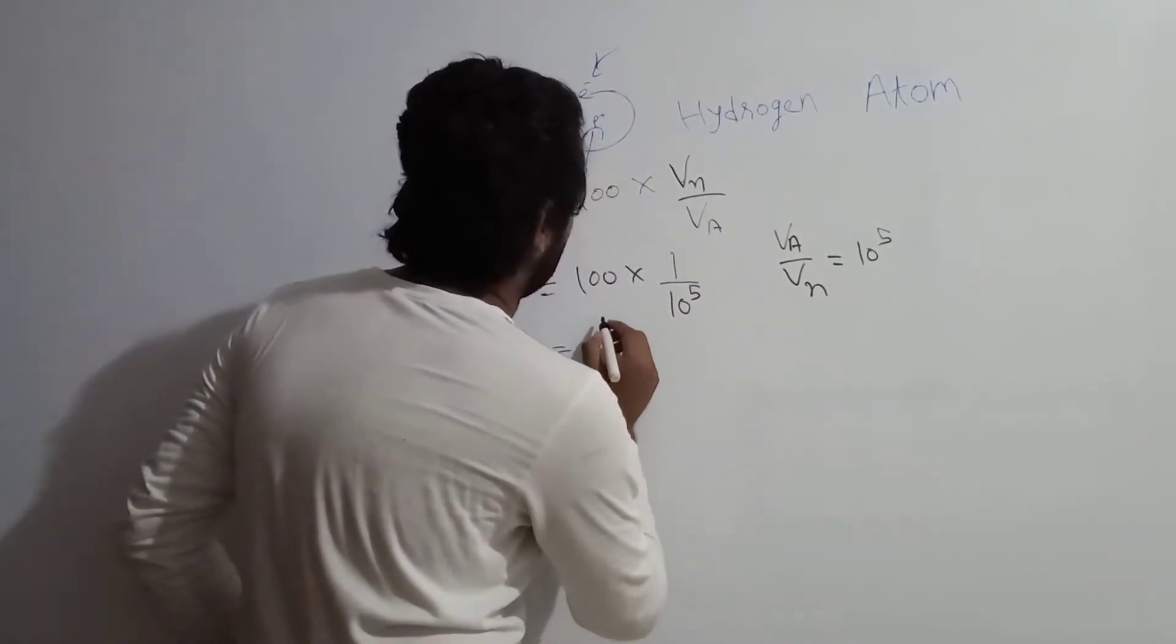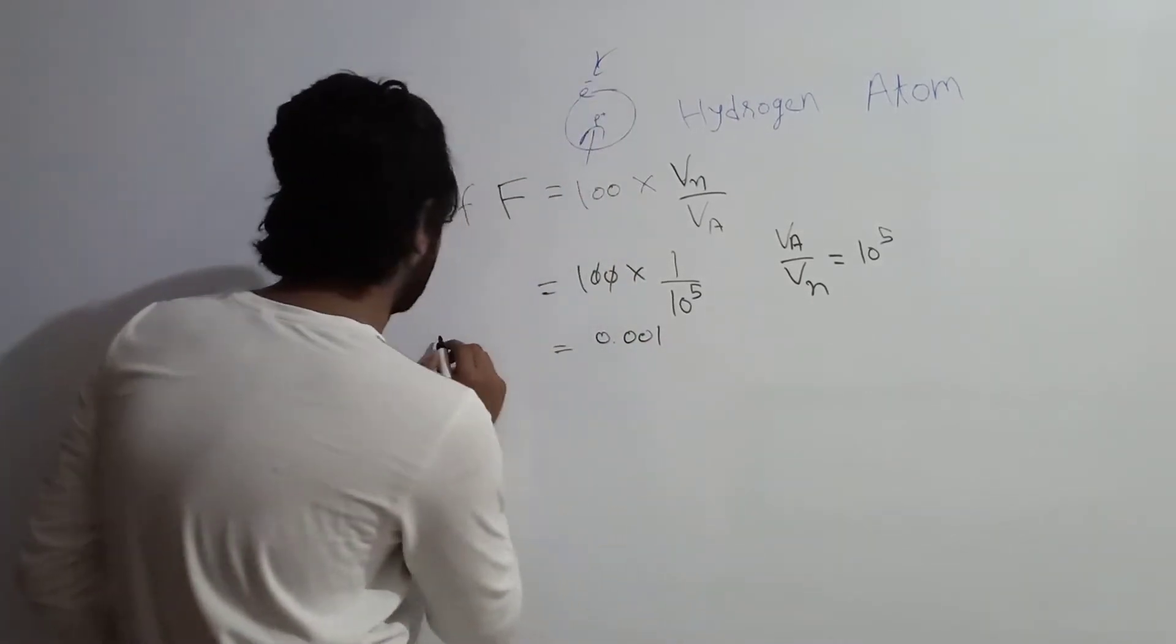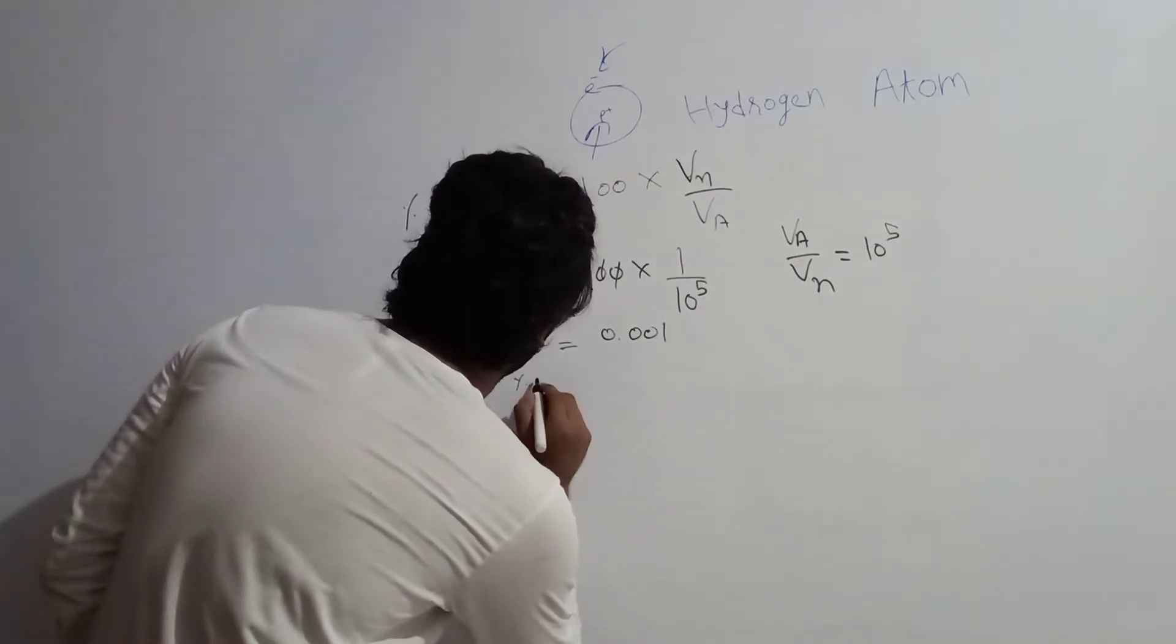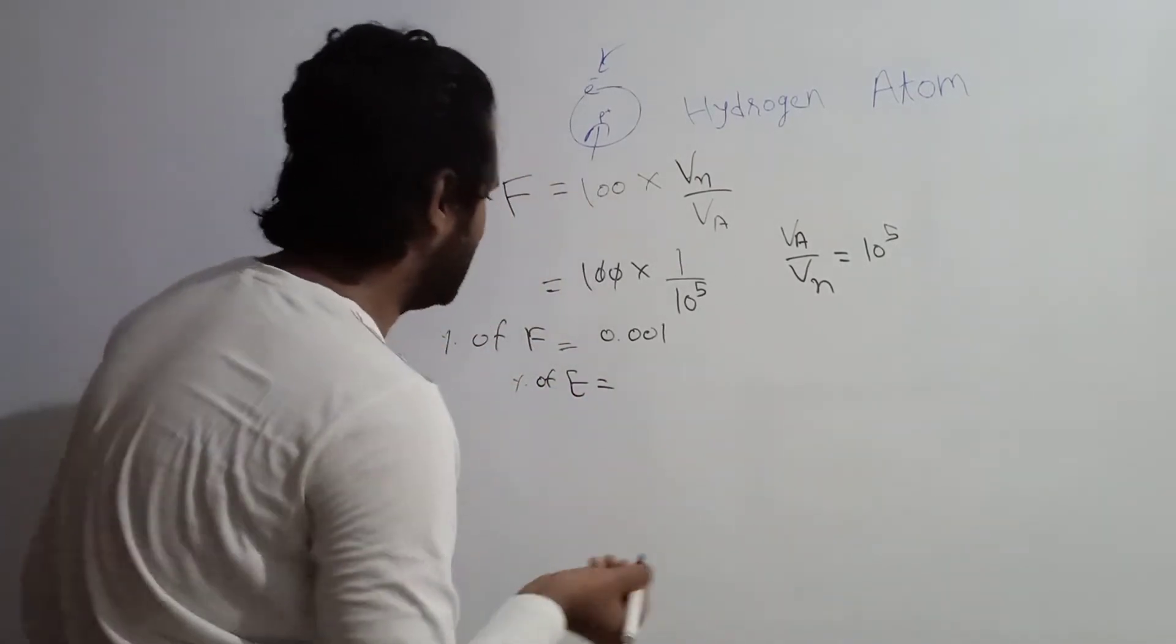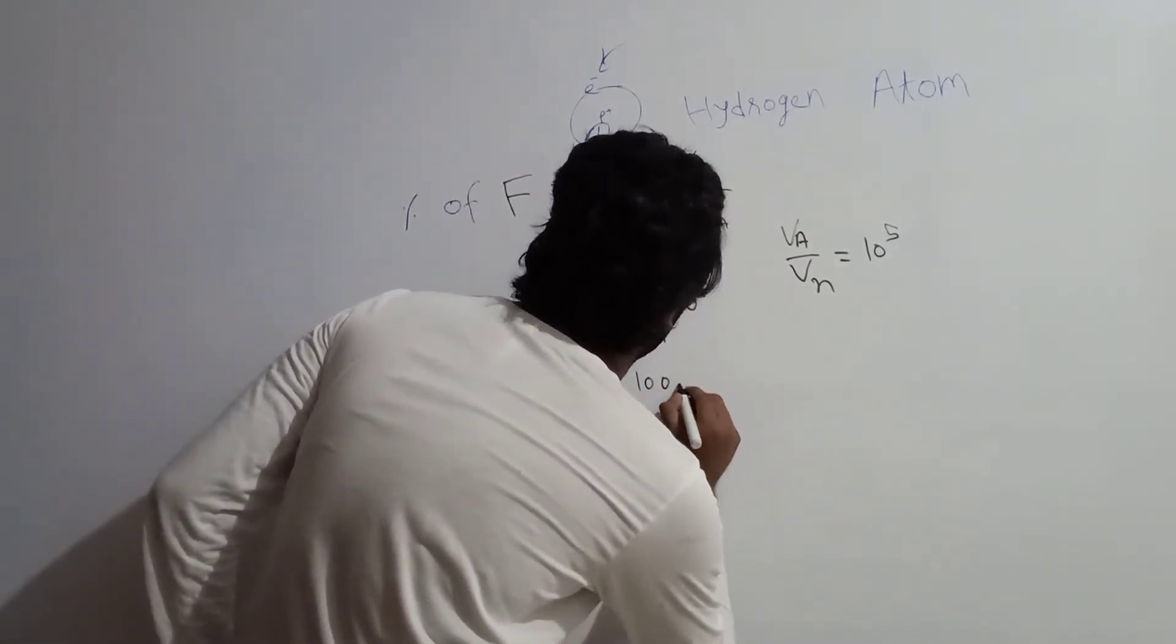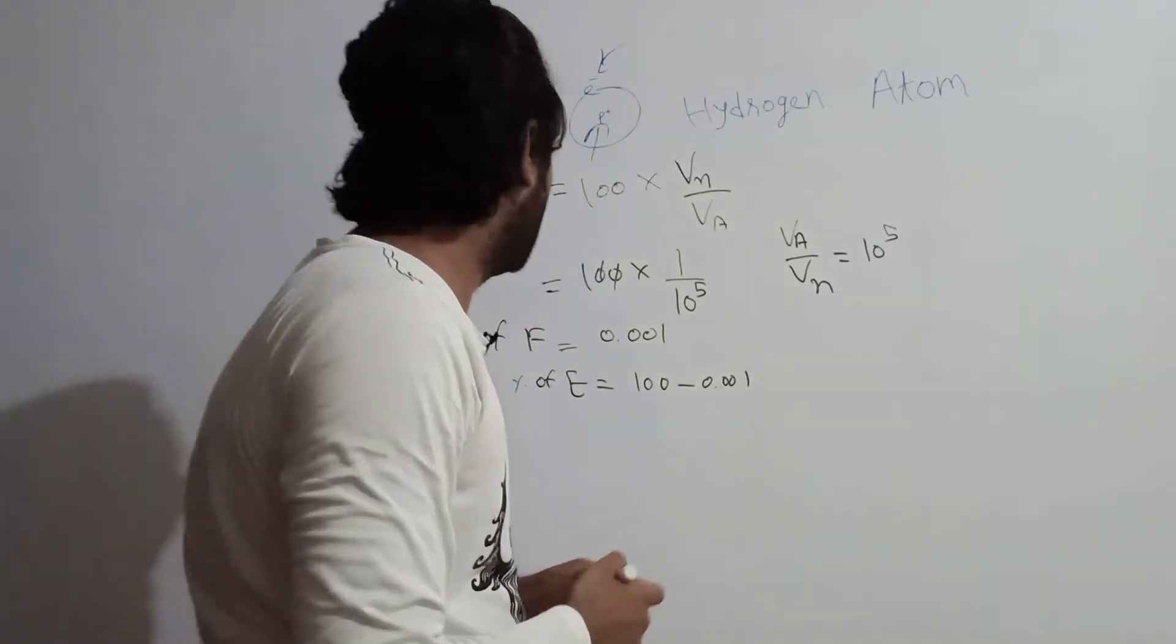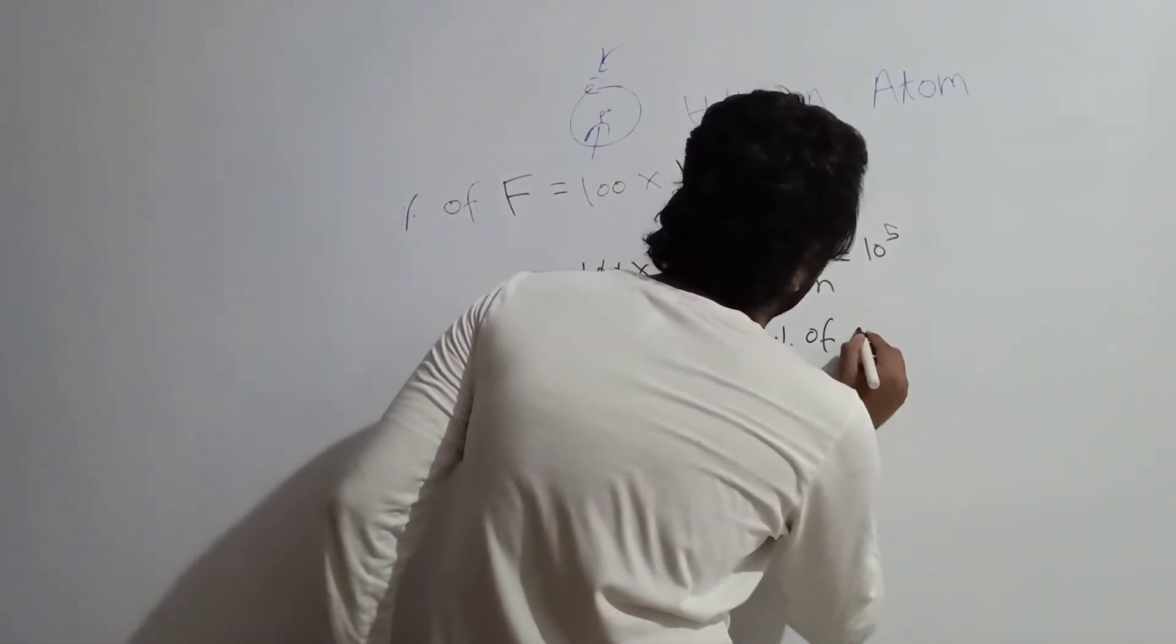So percentage of fullness is 0.001%. Then percentage of emptiness is 100 minus 0.001. Here, the formula will be: percentage of emptiness is equal to 100% minus percentage of fullness.